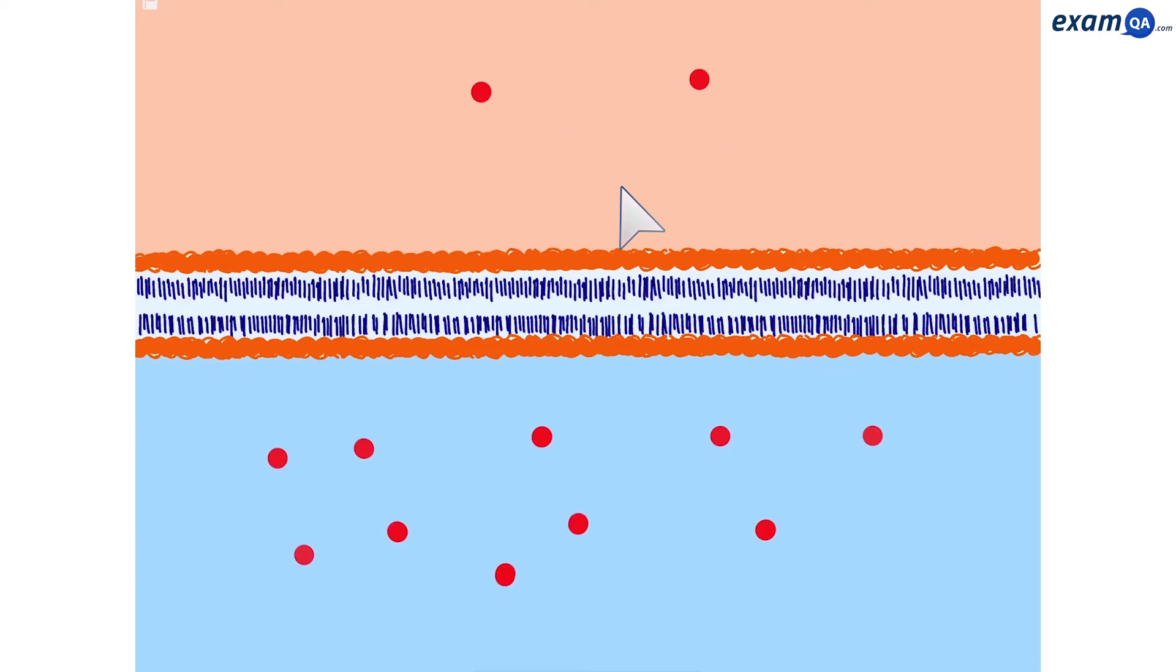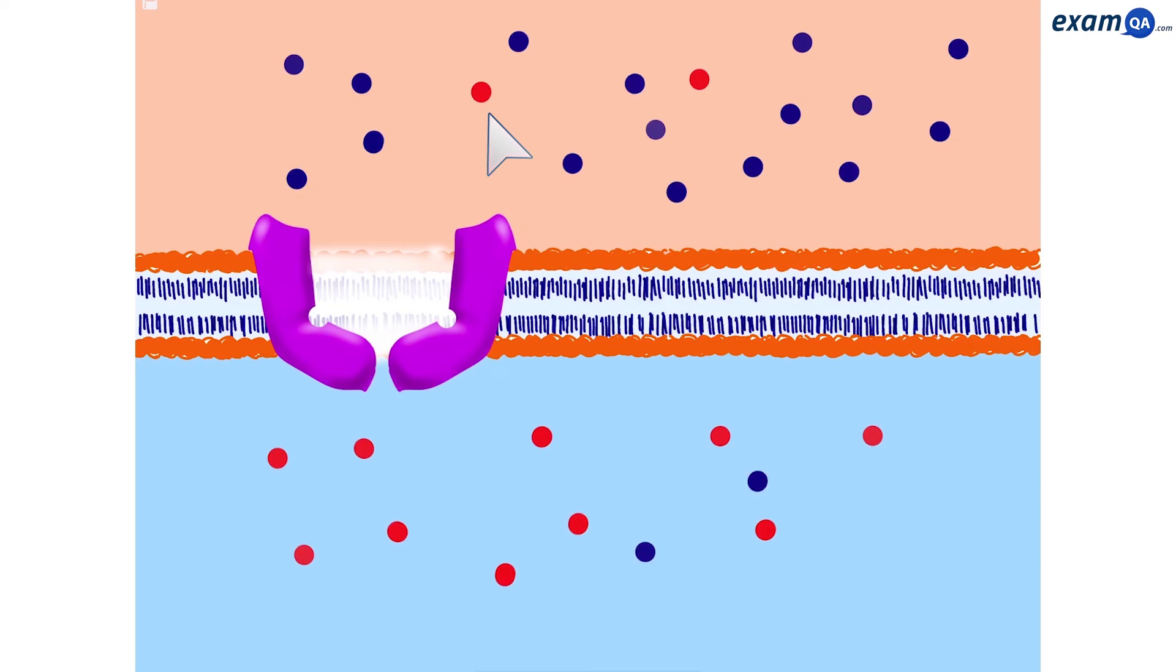So here we have one type of molecule. It has a low concentration outside the cell and a high concentration inside the cell. Here's the other type of molecule. This time there's a higher concentration outside and a low concentration inside the cell. Let's say the red dot wants to move from outside the cell to inside the cell. To do that we're going to use co-transport.